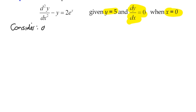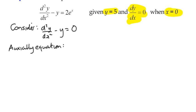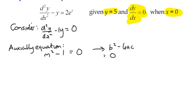We consider d²y/dx² minus y equals zero. The auxiliary equation will be m² minus 1 equals zero — there's no dy/dx term and the coefficient of y is negative one. Checking the discriminant: b is zero, and zero minus 4 times 1 times negative 1 gives a positive answer, so we have real distinct roots.